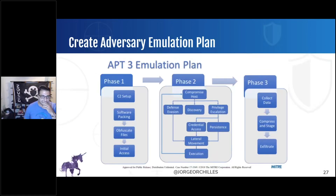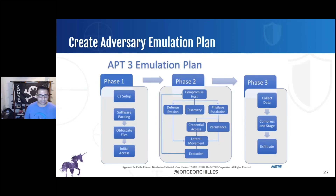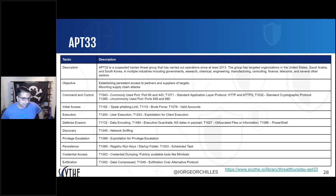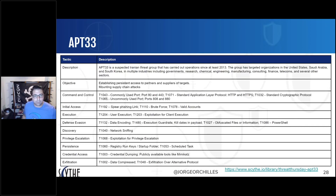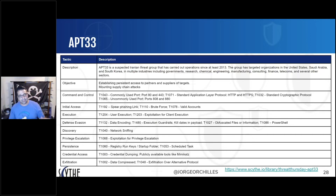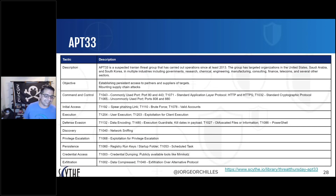Jamie Williams was on earlier — if you didn't see the talk, catch the recording. They now have adversary emulation plans for APT3 and APT29 including Cozy Bear. What I did is simpler: take APT-33, create a threat profile with the description and objective, then map it to MITRE ATT&CK — what did they use for command and control, initial access, execution, defense evasion? Now you have a plan. When you propose this, you're not just saying 'we're going to hack the network' — you have a documented plan.